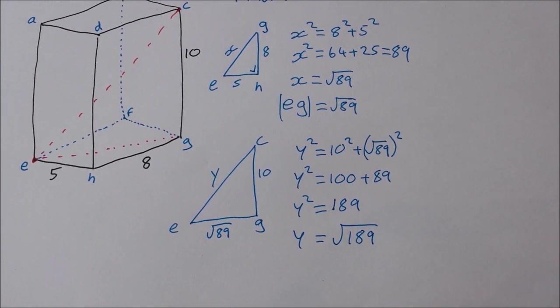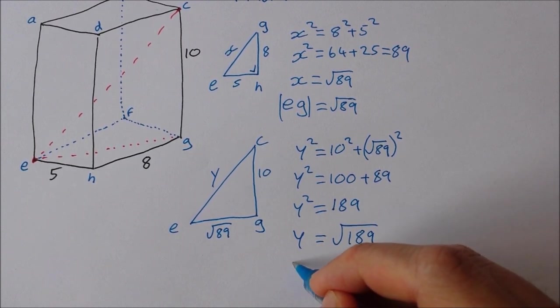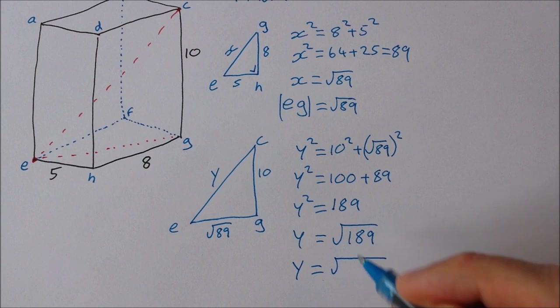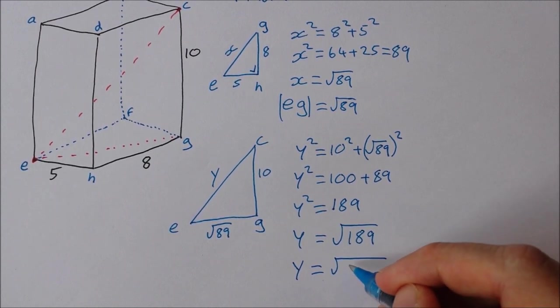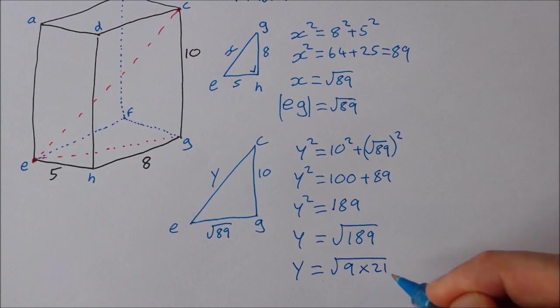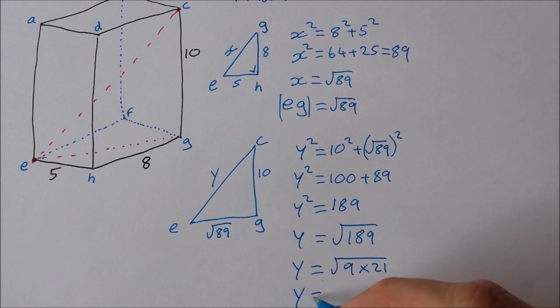The square root of 189 you can put it into a calculator and get it as a decimal. Or you can simplify it in surd form. Y is equal to the square root of 189 is 9 by 21. So that is 3 root 21.